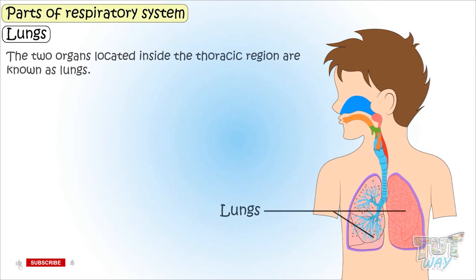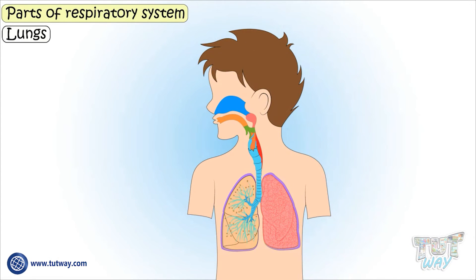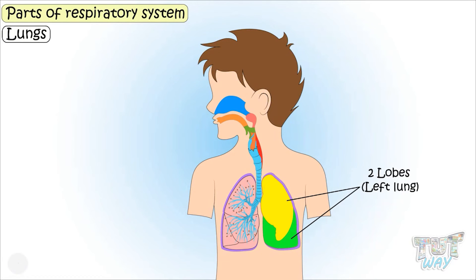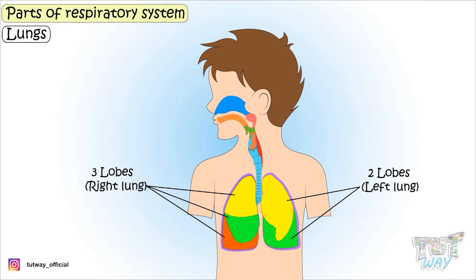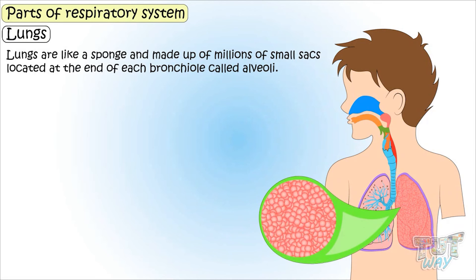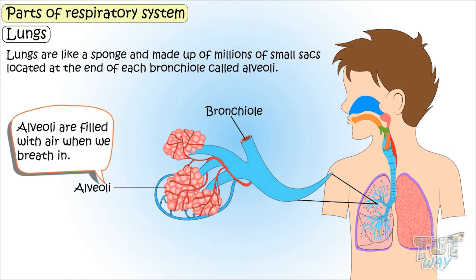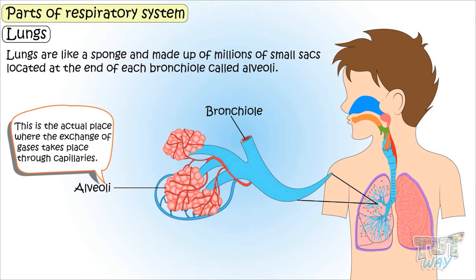Lungs: These two organs located inside the thoracic region are known as lungs. They are surrounded by a membrane that provides them enough space to expand. The two lungs are not identical — the left lung is smaller and has two lobes, while the right one has three lobes. Lungs are like a sponge and are made up of millions of small sacs called alveoli at the end of each bronchial branch, and these alveoli are filled with air when we breathe in.